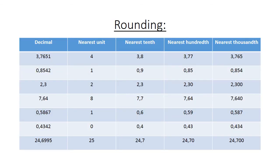Rounding: the first example is 3,7651. Rounded to the nearest unit it equals 4. The nearest 10 (one decimal place) is 3,8. The nearest 100 (two decimal places) is 3,77. And the nearest 1000 (three decimal places) is 3,765.